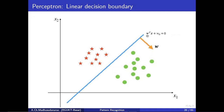Here w-transpose means the vector [w1, w2] and x means the vector [x1, x2], so the expression expands to w1*x1 plus w2*x2 plus w0 equals 0. This is the decision boundary. If you are above this decision boundary — w-transpose*x plus w0 greater than 0 — you classify as class 1. If w-transpose*x plus w0 less than 0, you classify as class 2.